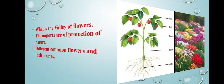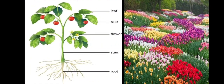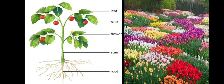Look here at the picture of the parts of a plant. Which are the different parts of a plant? You can see here: leaf, fruit, flower, stem, roots. These are the main parts of a plant. Out of them, which is the most beautiful and colorful part of a plant? Yes, it is the flower.